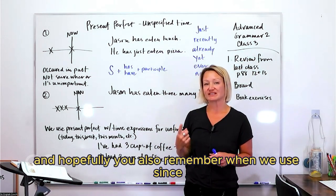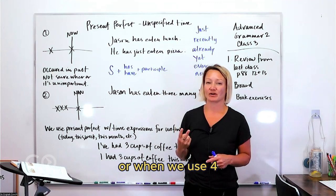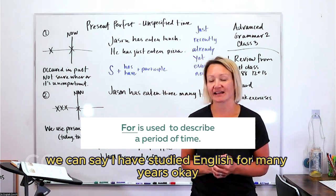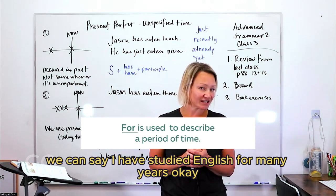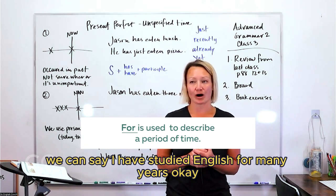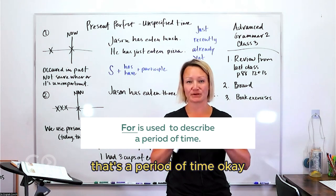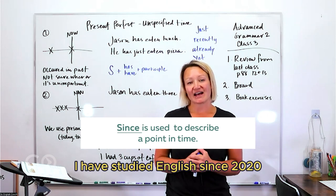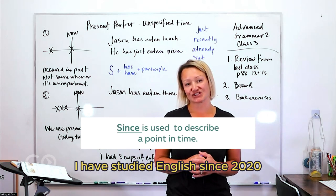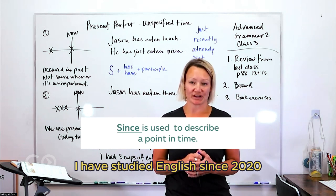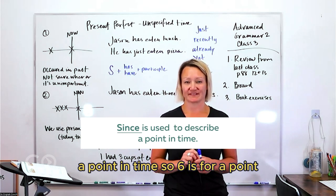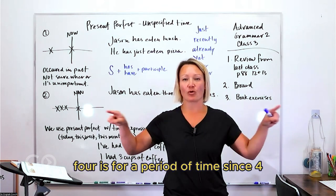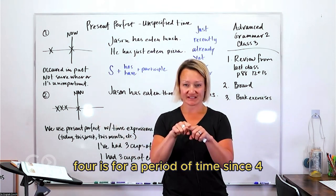And hopefully you also remember when we use since or when we use for. There's two different scenarios. So for example, we can say I have studied English for many years. Okay, that's a period of time. I have studied English since 2020, a point in time. So since is for a point, for is for a period of time.